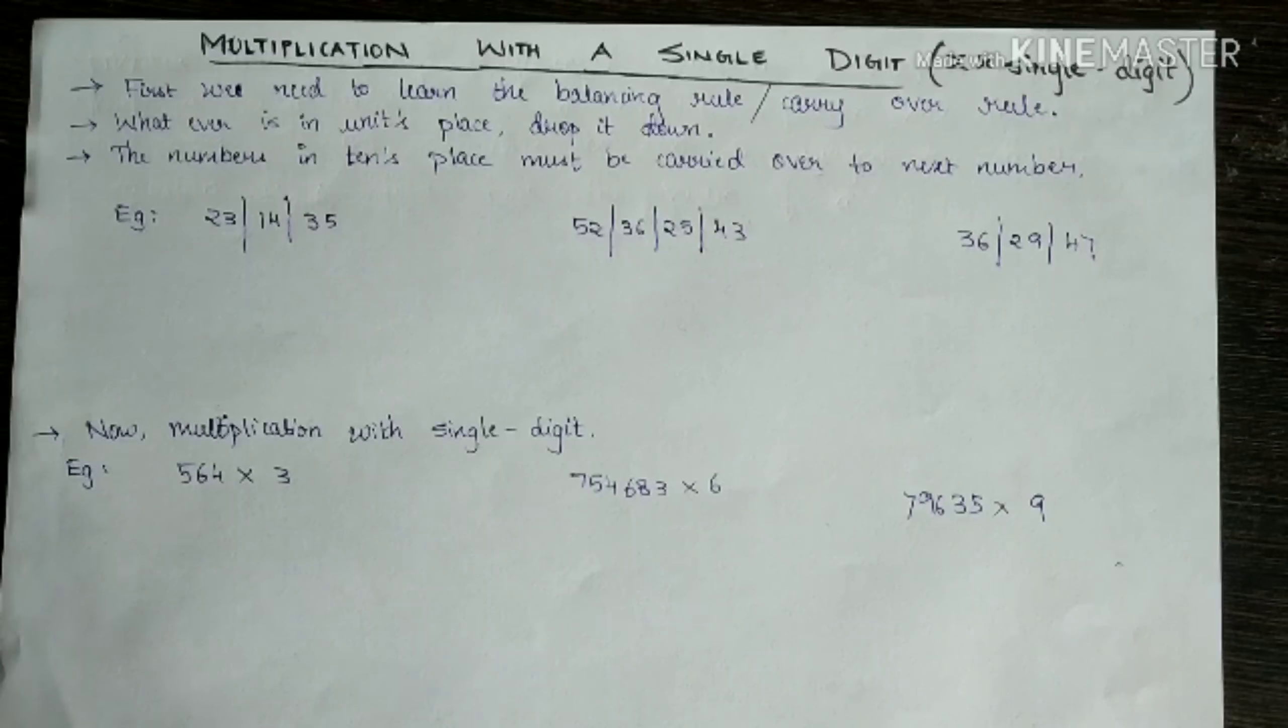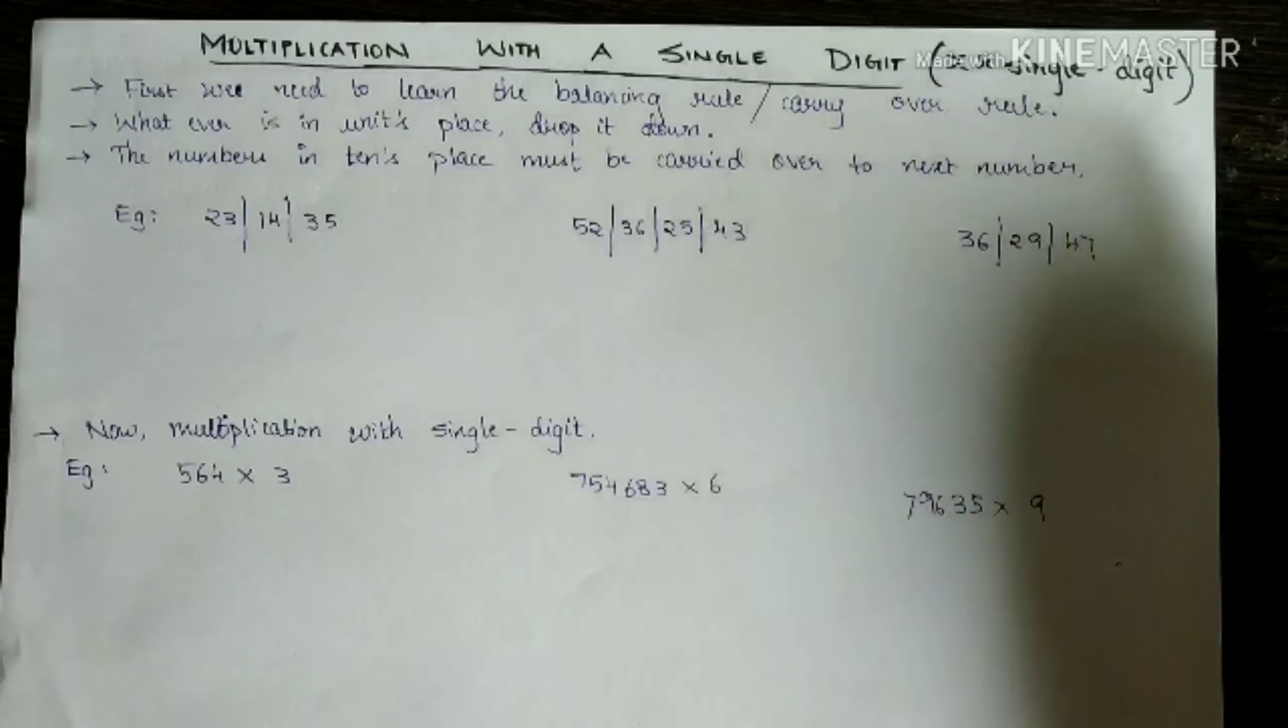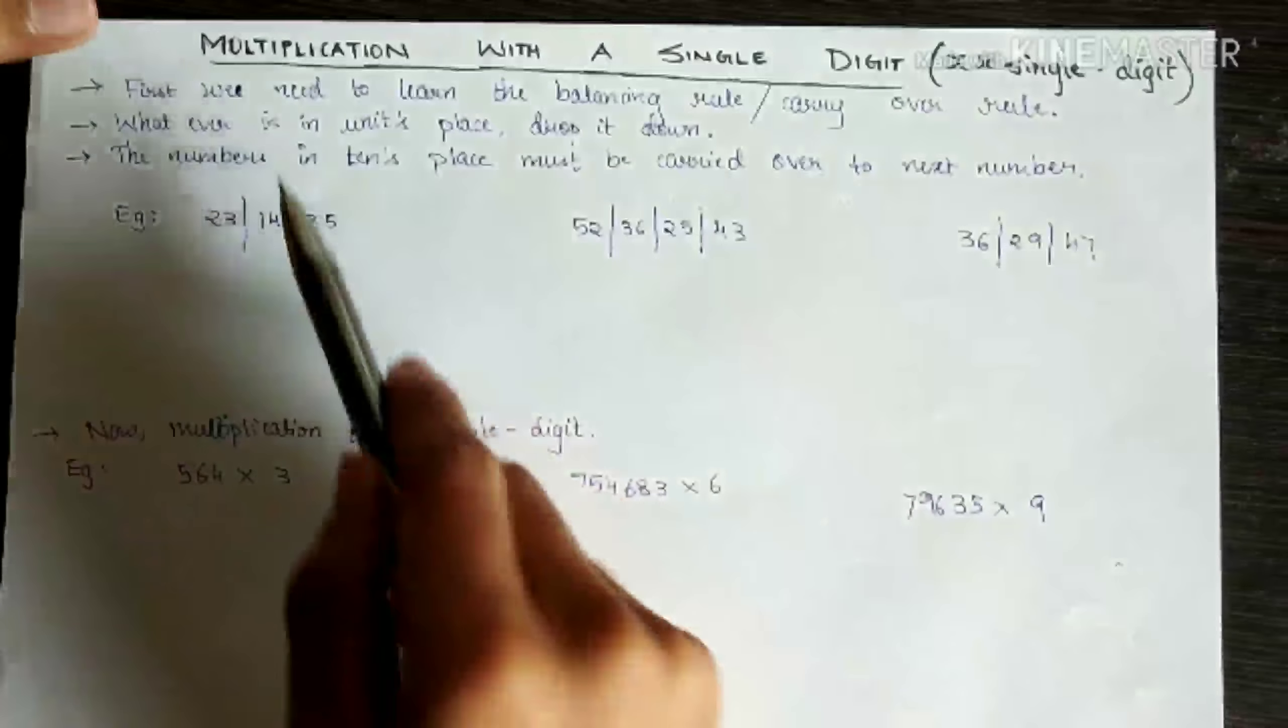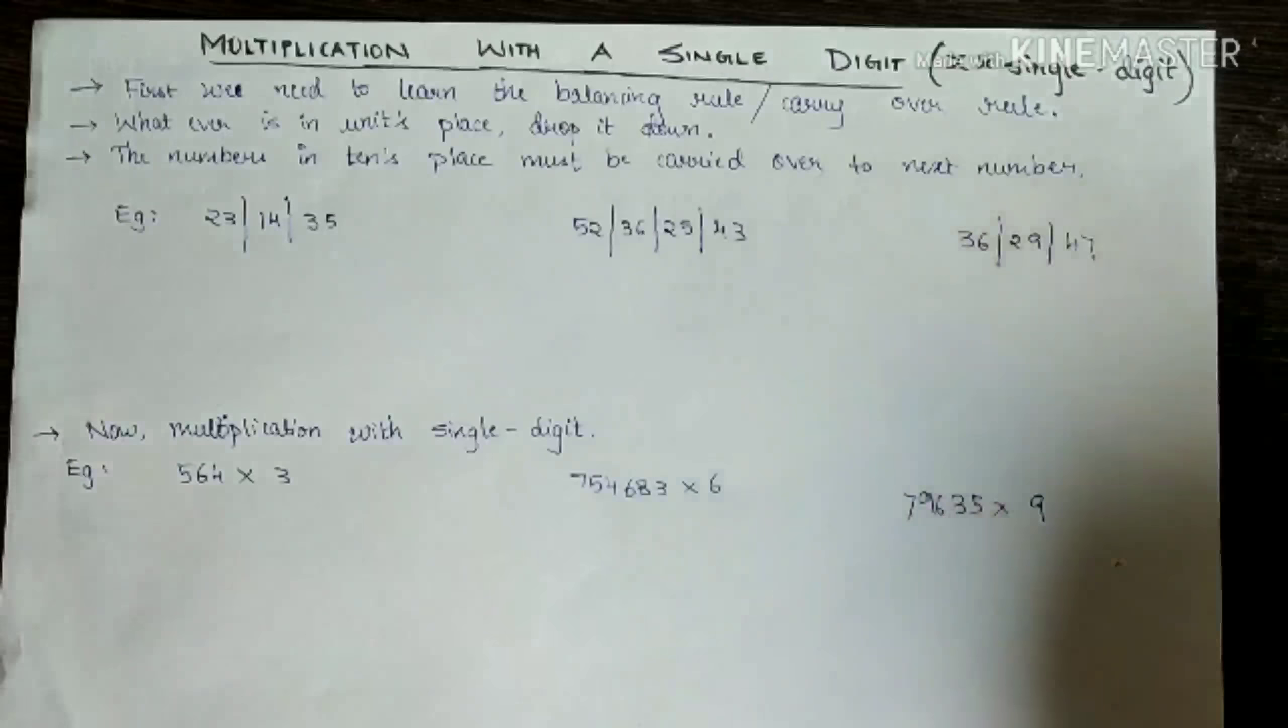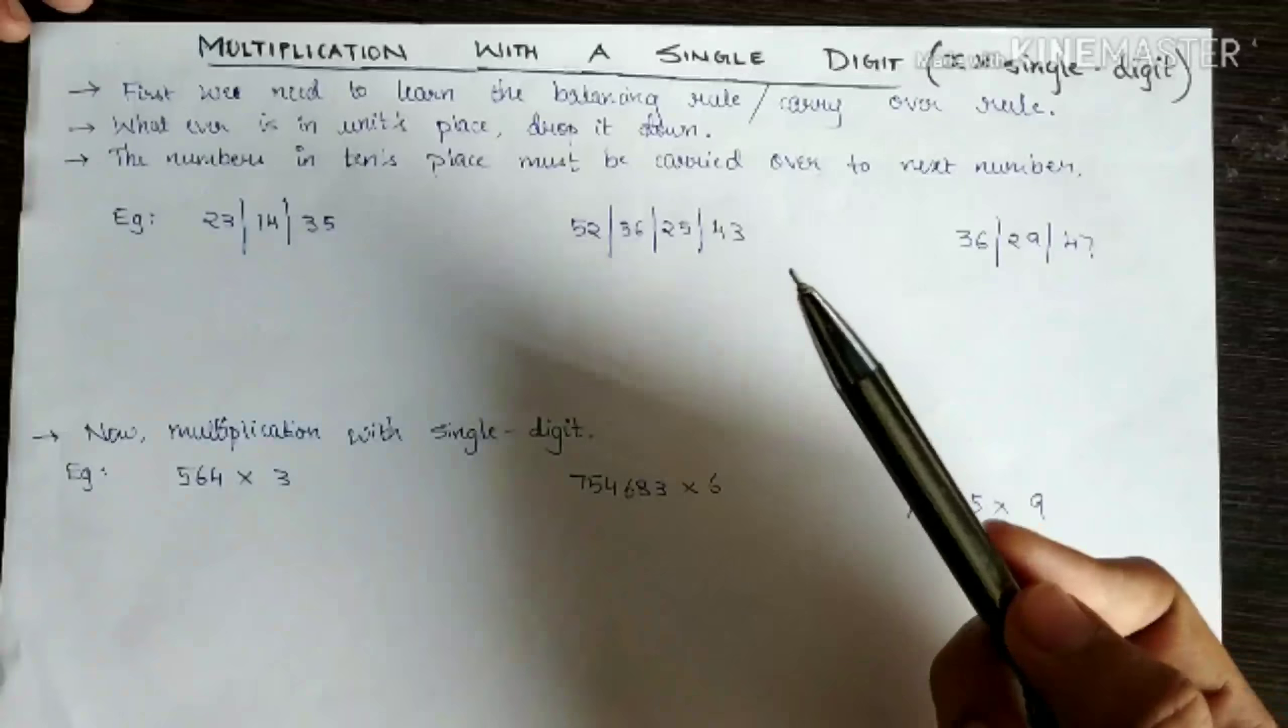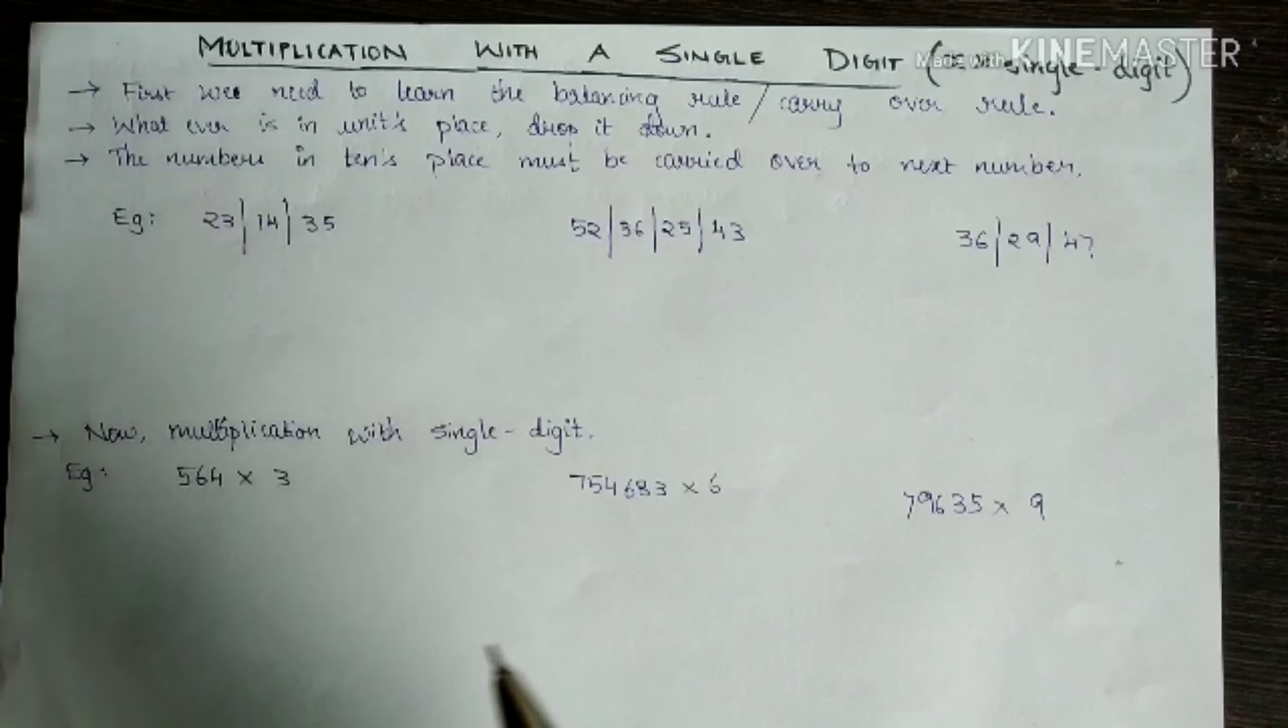The first video will be multiplication with a single digit, that is any number x into a single digit number. For that, before I do that, we need to follow a few steps. First we need to learn the balancing or carry over rule. That rule says whatever is in the units place drop it down and the numbers in tens place must be carried over to the next number. That is all balancing rule says.